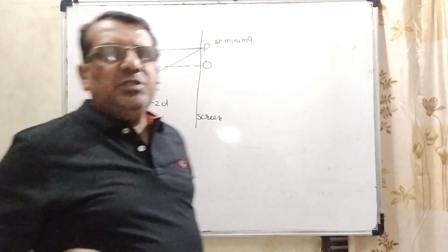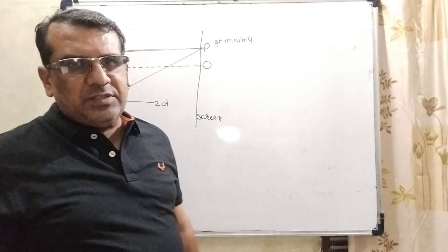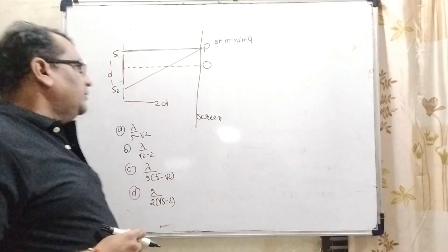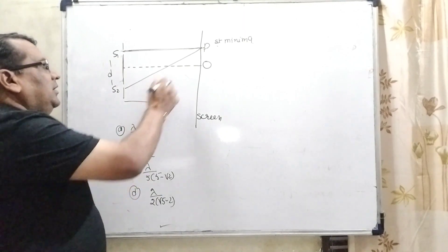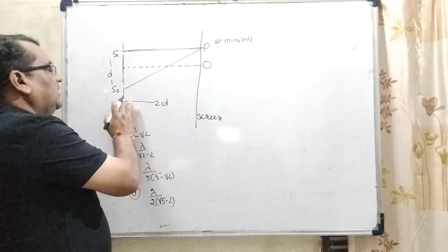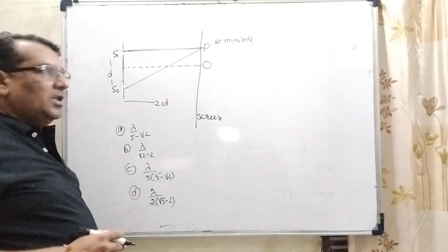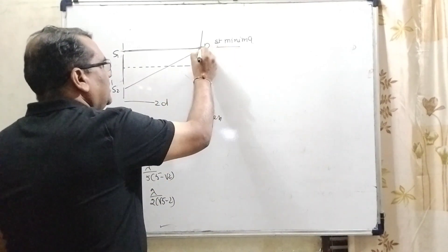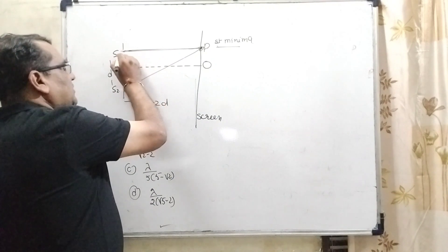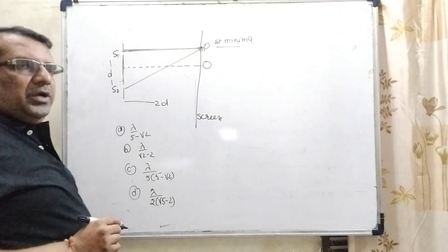This question is based on Young's double slit experiment. Here we have given the slits S1 and S2 having the distance as d, and the distance between the screen and the slit is 2d. The first minima is formed such that S1 and p are just opposite.